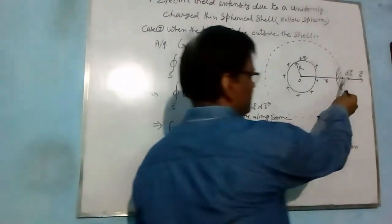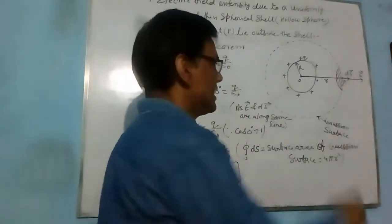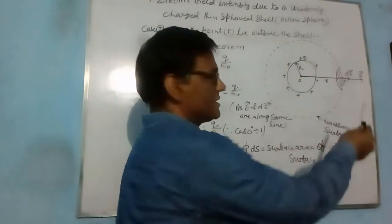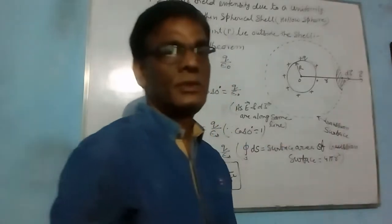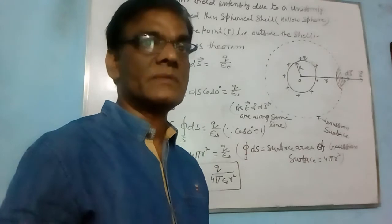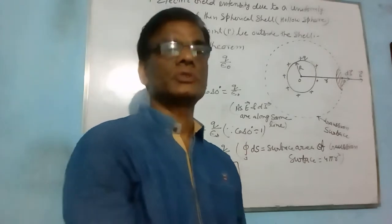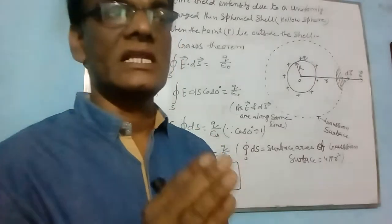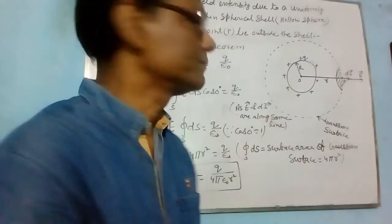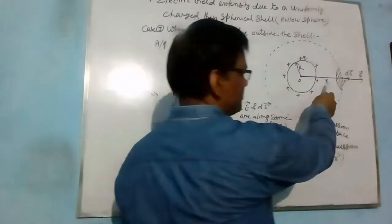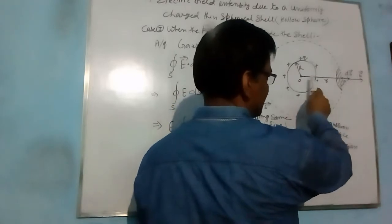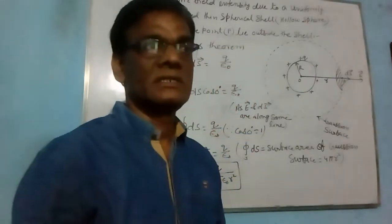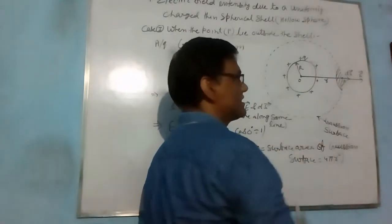Suppose P is a point which lies outside this spherical shell at a distance R, where we have to calculate the electric field intensity due to this charged thin spherical shell using Gauss law. We take R radius and O at the center, and we draw a Gaussian surface.